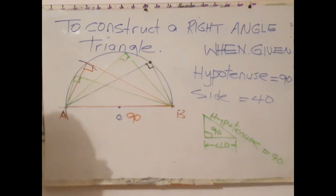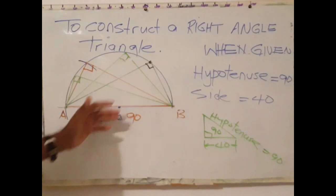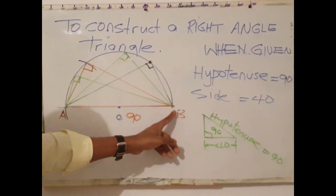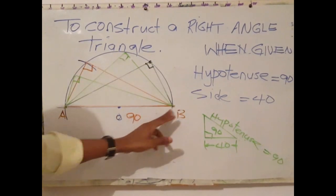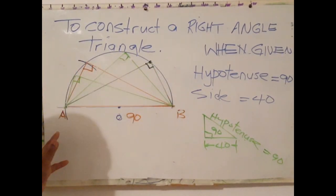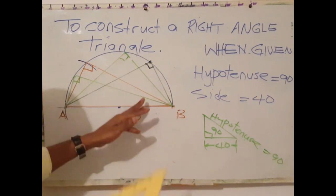So it means, therefore, any triangle that is formed within a semicircle, once the base is the full diameter, the angle will always be 90 degrees. It's important to know this only works when the base is the diameter. So any point on the circumference will give you a perfect right angle.